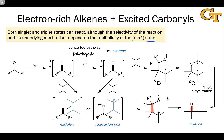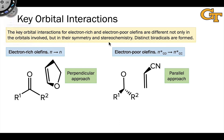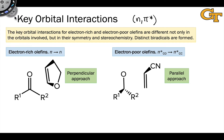Each of these distinct pathways has mechanistic implications for regioselectivity and stereoselectivity. It's worth highlighting the key orbital interactions when an excited ketone engages with either an electron-rich or electron-poor olefin. Starting with the electron-rich olefin, we're thinking about the n-π* excited state of the carbonyl, so the n orbital is electrophilic and the π* orbital is nucleophilic — an idea we've seen numerous times already.